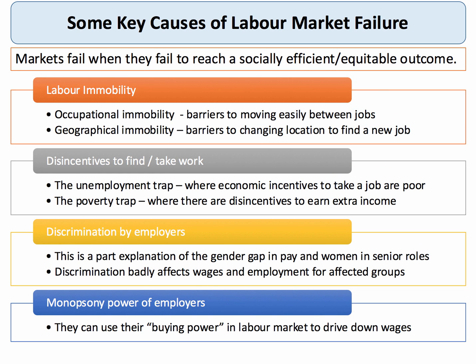In the labour market there are also some key causes of labour market failure. High persistent long-term unemployment is clearly a failure of the labour market — markets fail to reach a socially optimal level. Why? Because labour is immobile, both occupationally and geographically. Oftentimes people face disincentives or barriers to finding work, and the incentive to earn extra income may not be particularly strong.